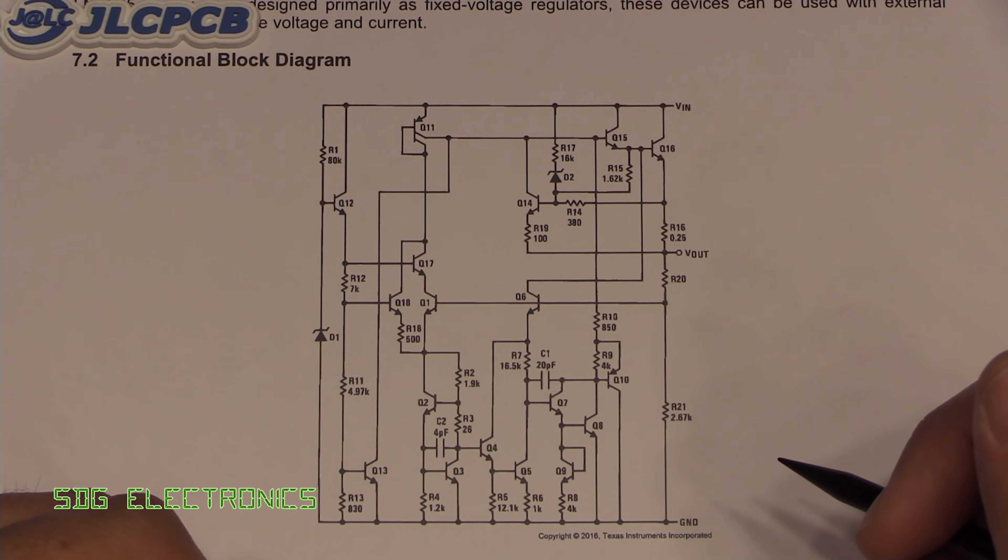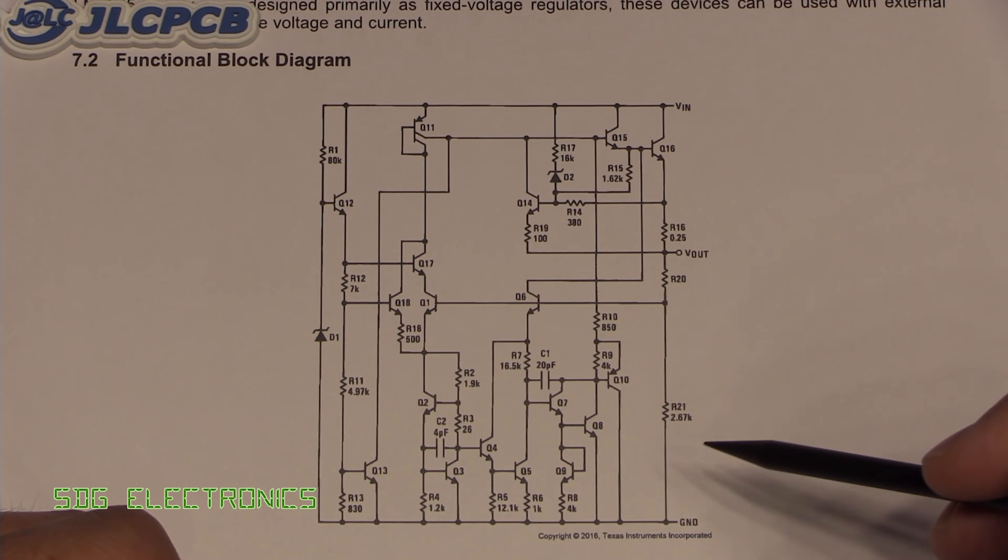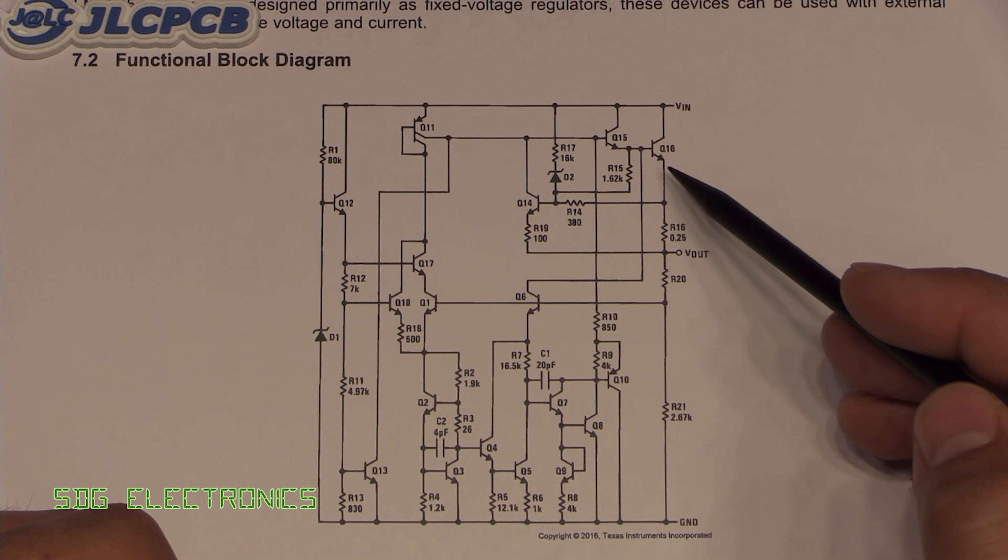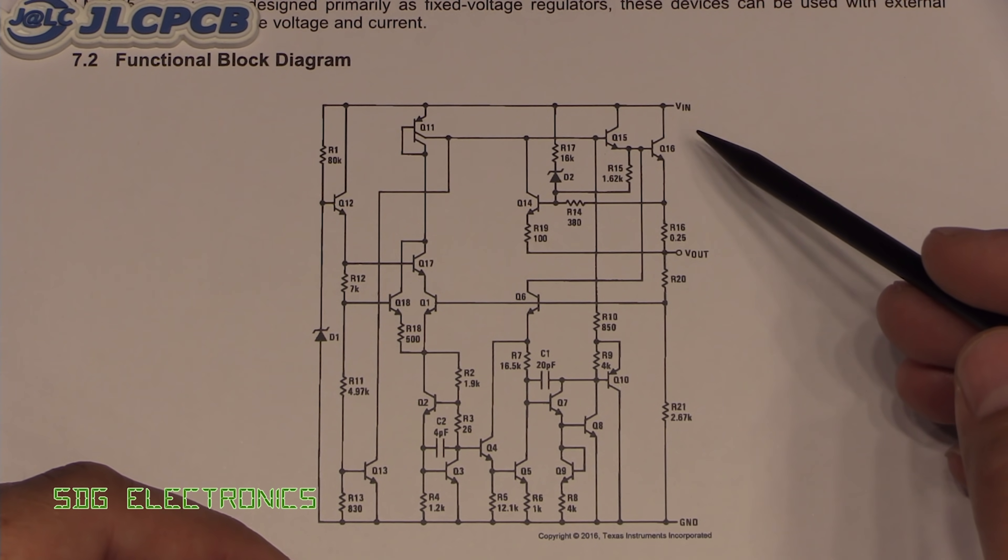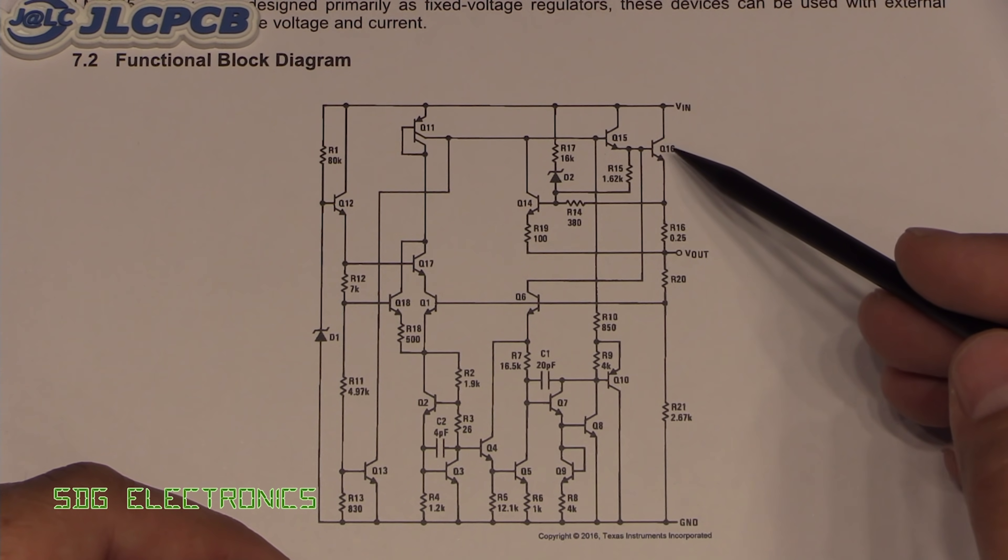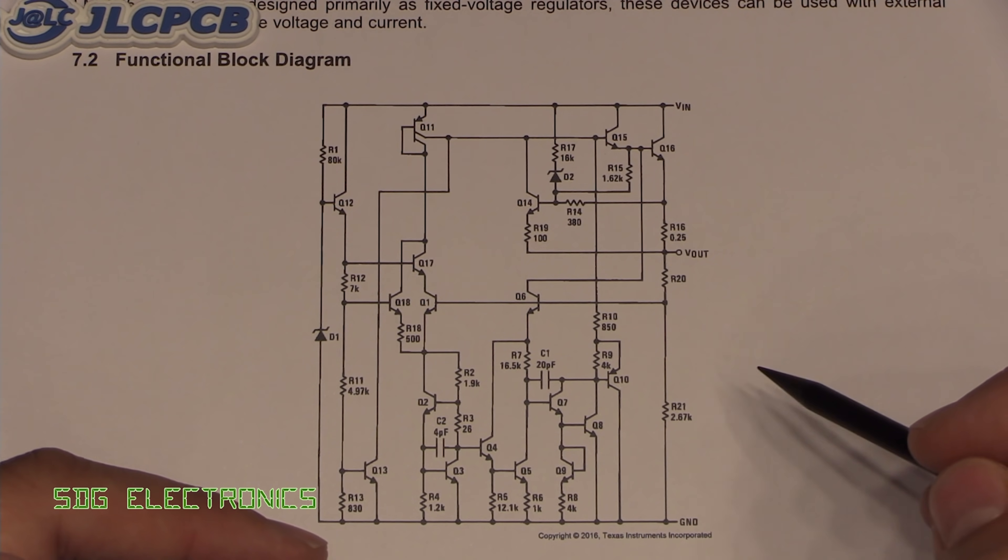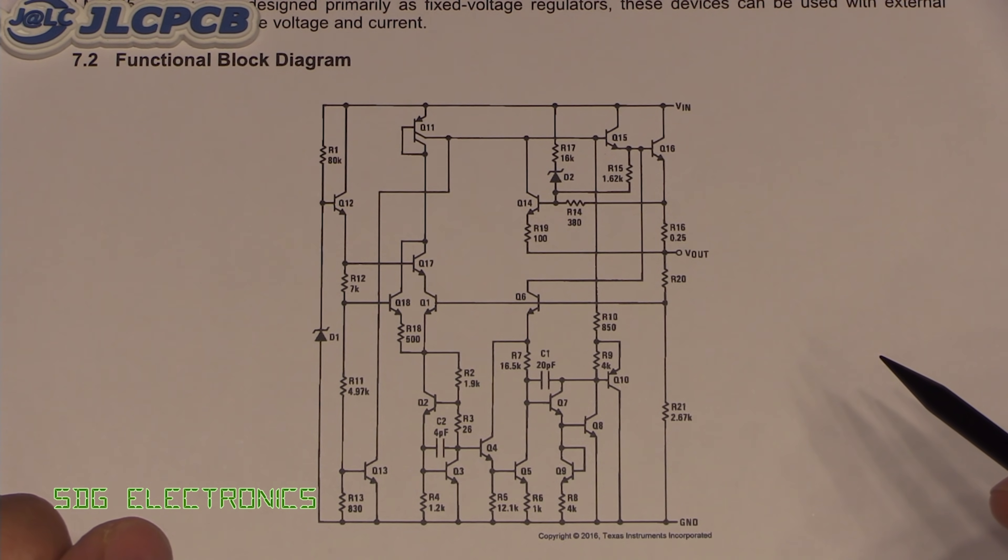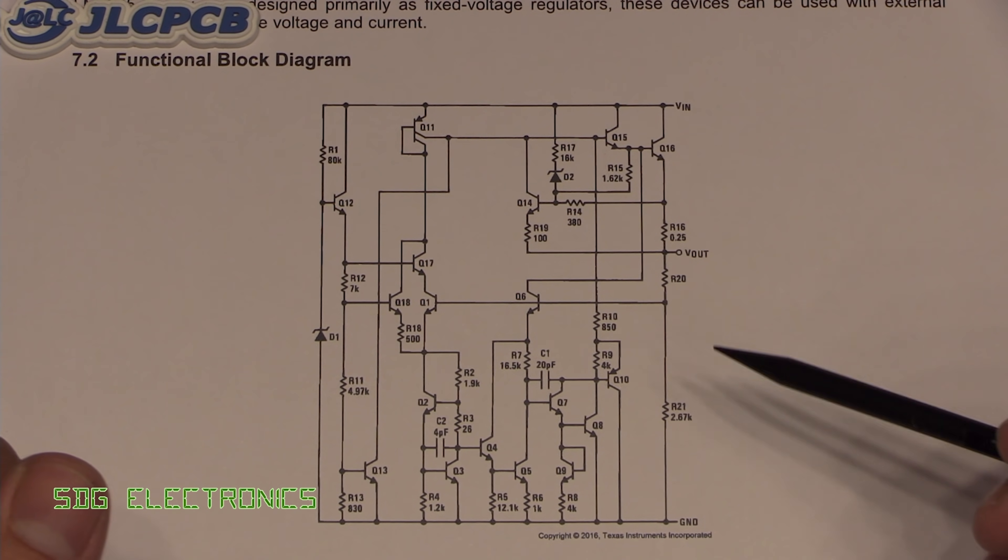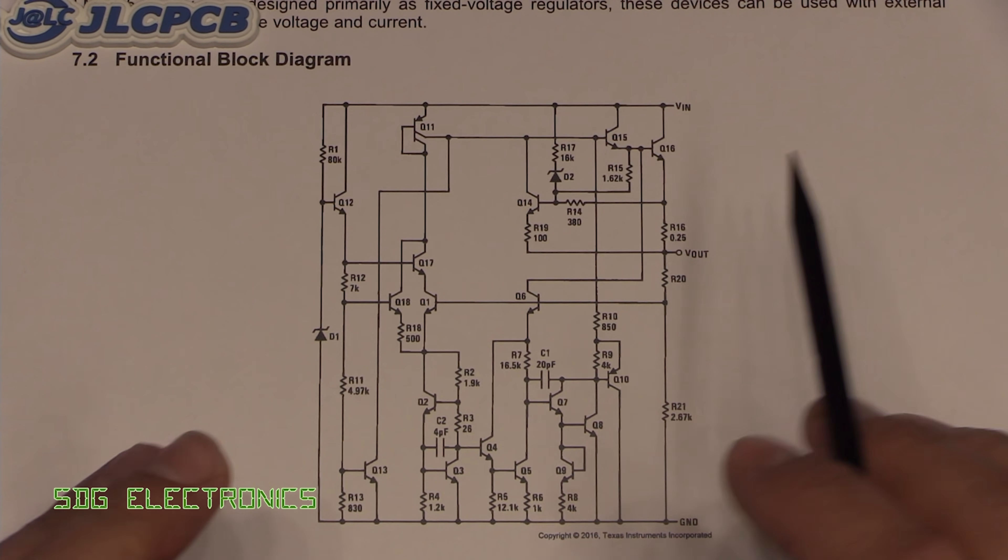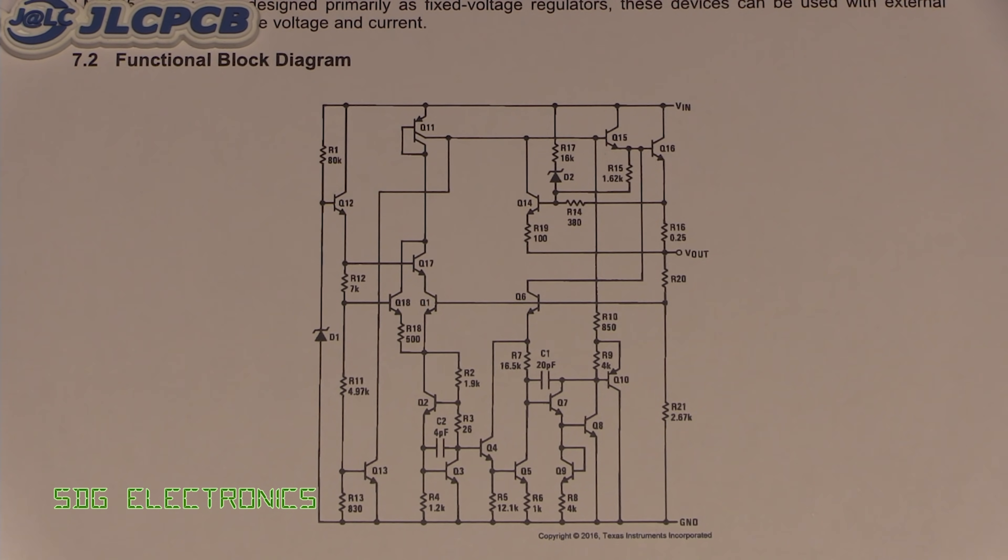Now to start off with, I will point out that some linear regulators have very specific requirements on the input and output capacitors because they use different pass elements. In particular, LDO regulators are known for this because they tend to use PNP type pass elements with very different loop gain. Today we're going to discuss the LM7805 type regulator with its NPN pass transistor so we can focus on the wider picture and the control loop inside this device.